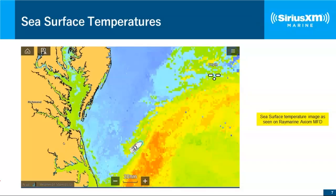A question popped up about whether these charts can be overlaid on Navionics. The answer is yes — with Raymarine, whatever chart is displayed, the weather goes over the top of whichever one you choose to show on your screen.